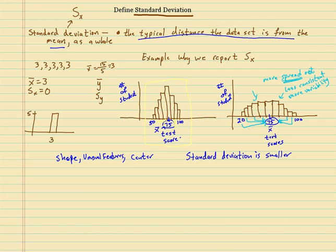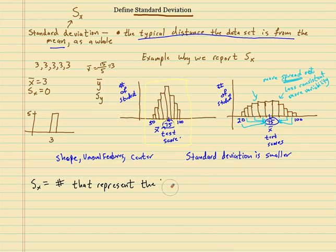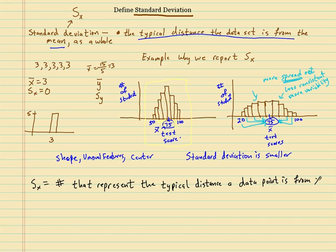So when we find the standard deviation, we find a number that represents the typical distance a data point is from X-bar. It all comes with practice — you have to look at many, many distributions, and it may come easier to some people than others.